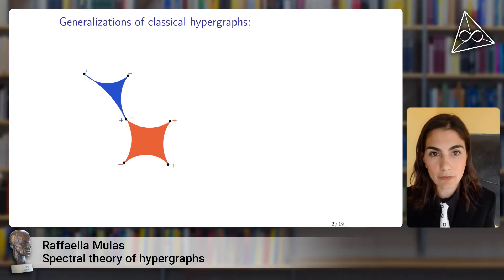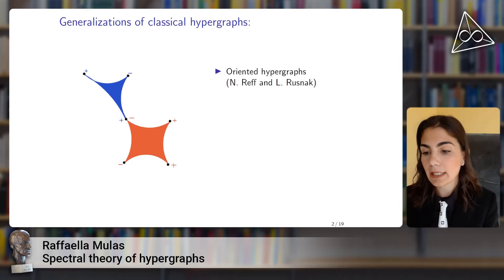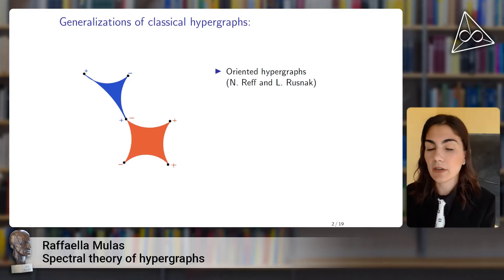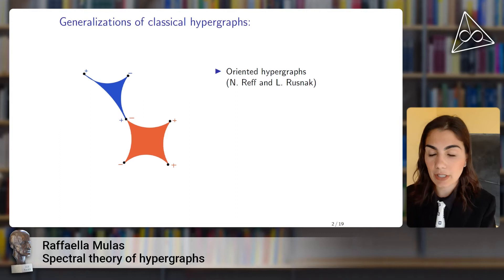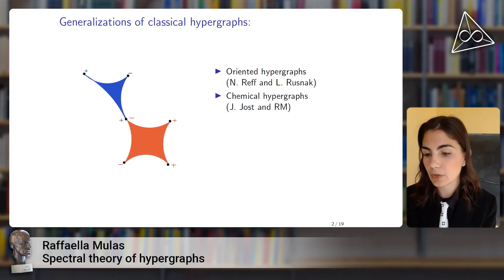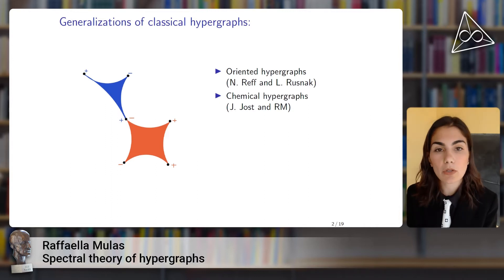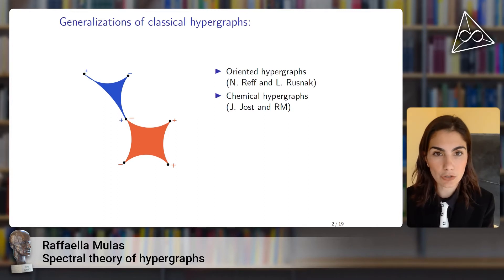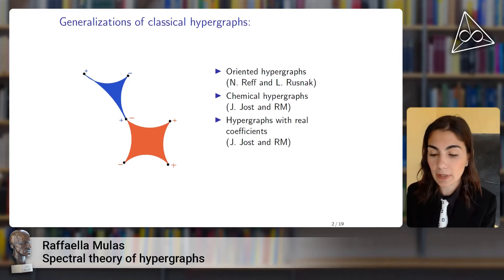There are also generalizations of classical hypergraphs. For example, in the oriented hypergraphs introduced by Nathan Reff and Lucas Rusnak, we have vertices, edges, and also the additional structure that for each vertex-edge incidence we have a sign — either a plus sign or a minus sign — and these are the hypergraphs on which I will focus today. In the chemical hypergraphs that I introduced together with my PhD supervisor Jürgen Jost, we also allow vertices to have both a plus and a minus sign for an edge, to model catalysts in chemical reactions, since catalysts are part of a chemical reaction but are not changed by it.